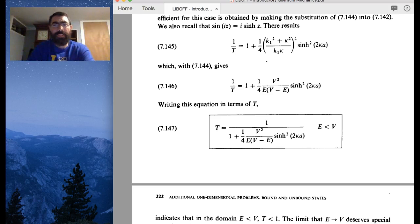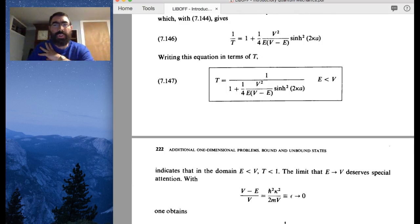But it still has kind of the same, so now you can rewrite this, and now you can get the transmission probability through the barrier with this kind of complicated-looking function, but really, again, it's just dependent on the height of the barrier.